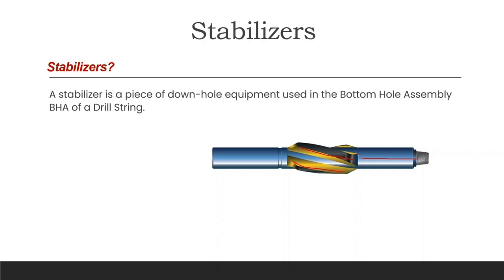Stabilizers are properly positioned in the BHA to accomplish specific functions. The blades contact the walls of the drilled hole and create a side force that pushes the BHA toward the desired direction while the drill string is rotated, as we will learn in the section on uses of stabilizers to control hole deviation.